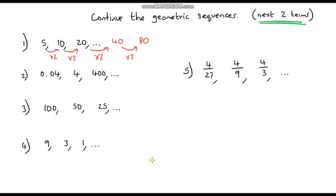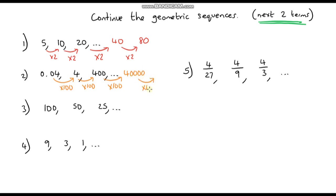Going from 0.04 to 4: we're moving the decimal point two places to the right, which is the same as multiplying by 100. And that works because 4 times 100 is 400. So multiplying by 100: 400 times 100 gives us 40,000, and then 40,000 multiplied by 100 gives us 4 million.